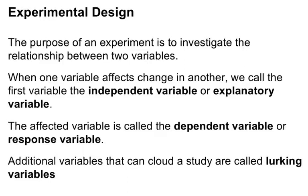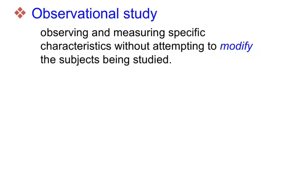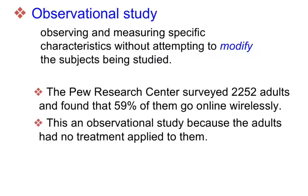An observational study is one where you're not really influencing, changing, or altering the group. For example, here we have a survey where we ask a couple thousand adults how they go online. Even though I'm interacting with them and getting that information, I'm not changing or tweaking anything — I'm just listing the results they have. We call that an observational study: I'm just noting the results and collecting that data.